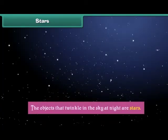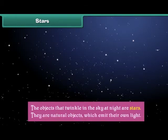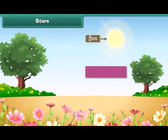The objects that twinkle in the sky at night are stars. They are natural objects which emit their own light. The Sun is also a star.